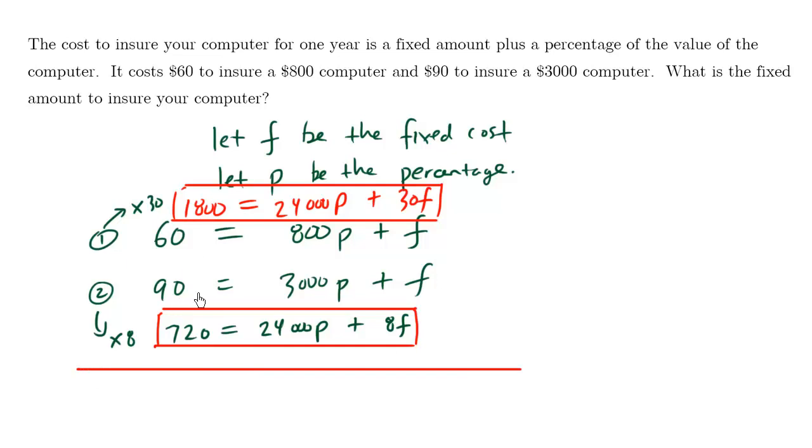So 1,800 minus 720 is 1,080 equals, and the P's disappear, 30F minus 8F is going to be 22F.